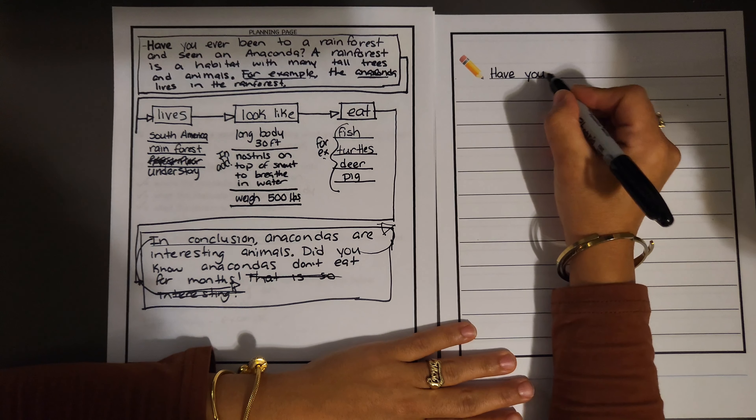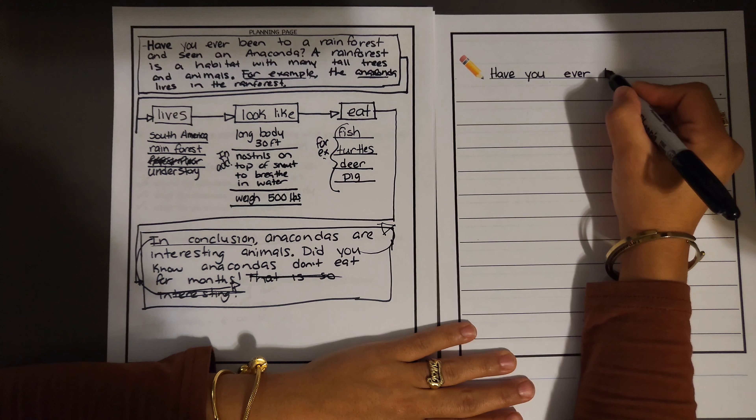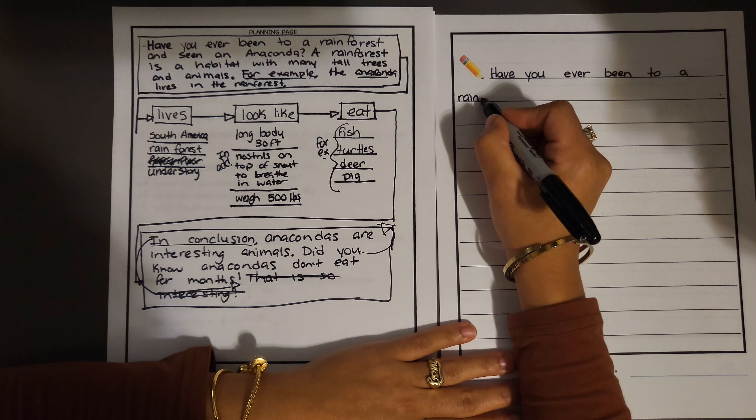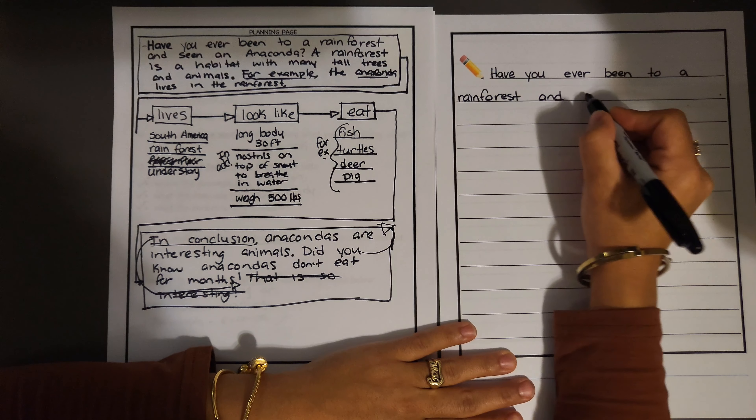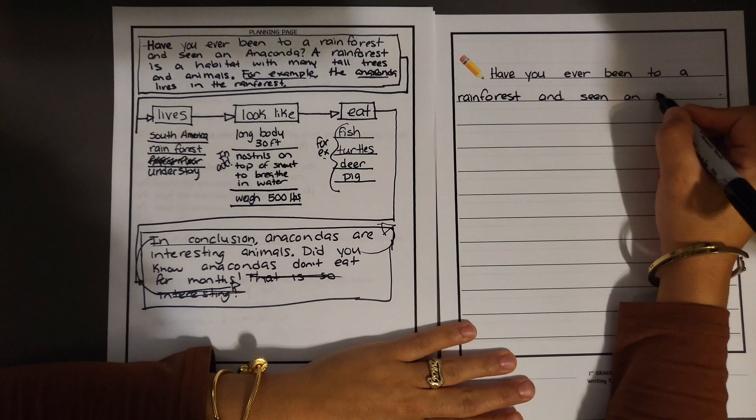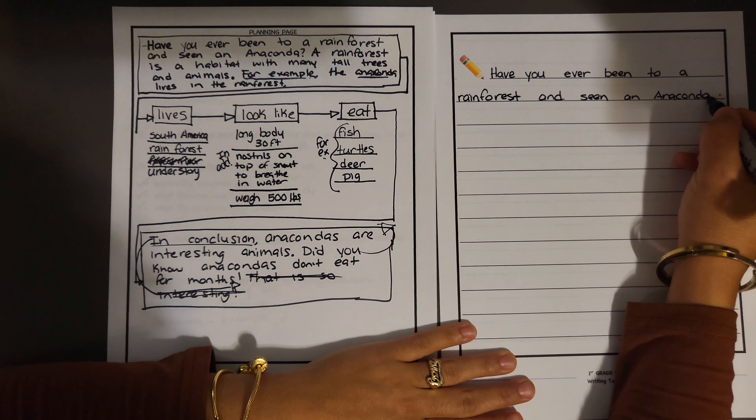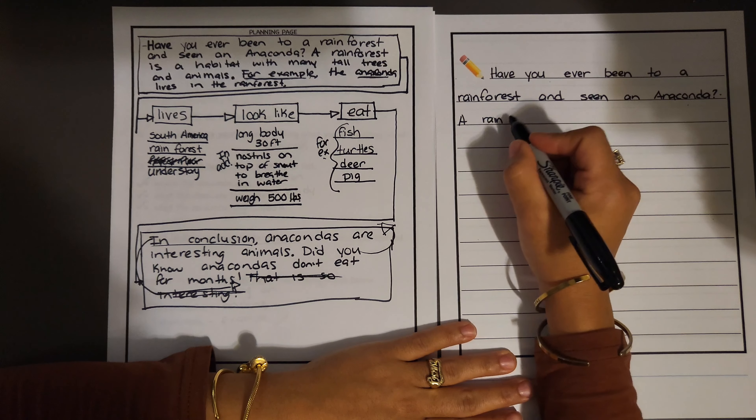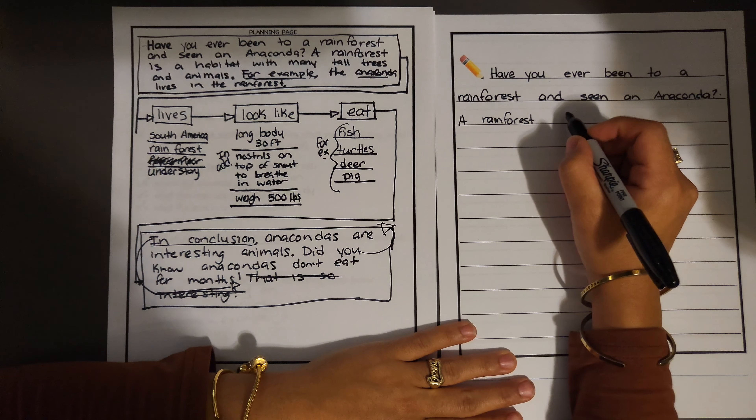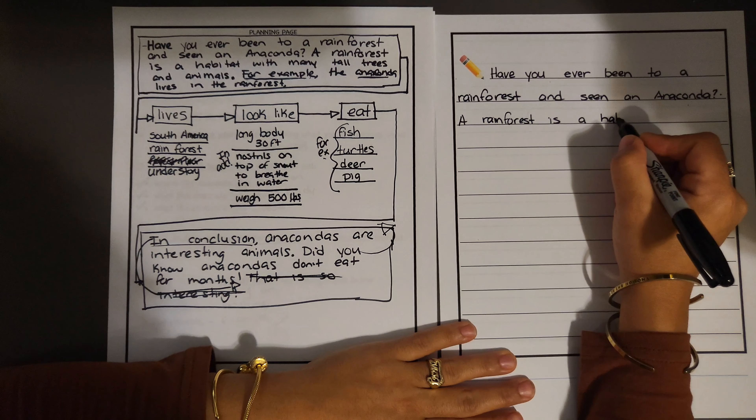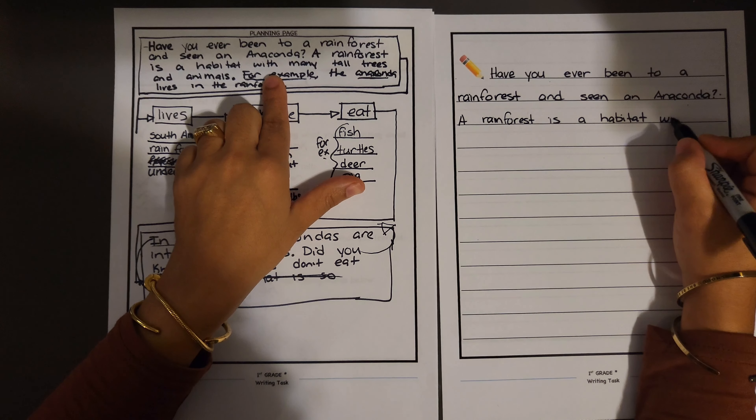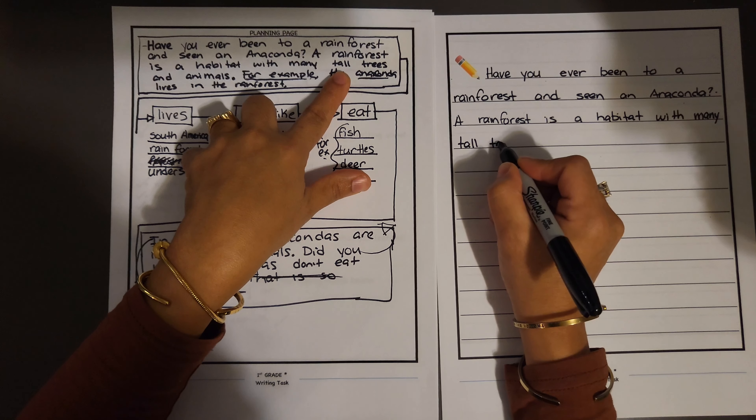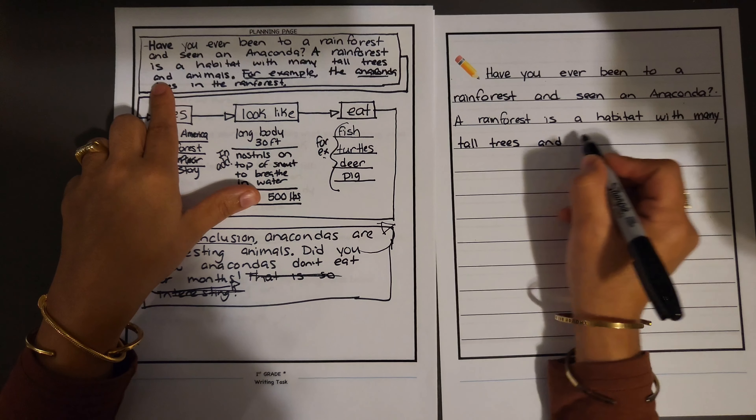Writing: 'Have you'—finger space—'have you ever been to a'—I don't have any more space—'to a rainforest. A rainforest and seen an anaconda?' Question mark. Notice how small my words are; they are not taking up the whole space. 'A rainforest is a habitat with many tall trees and animals.'